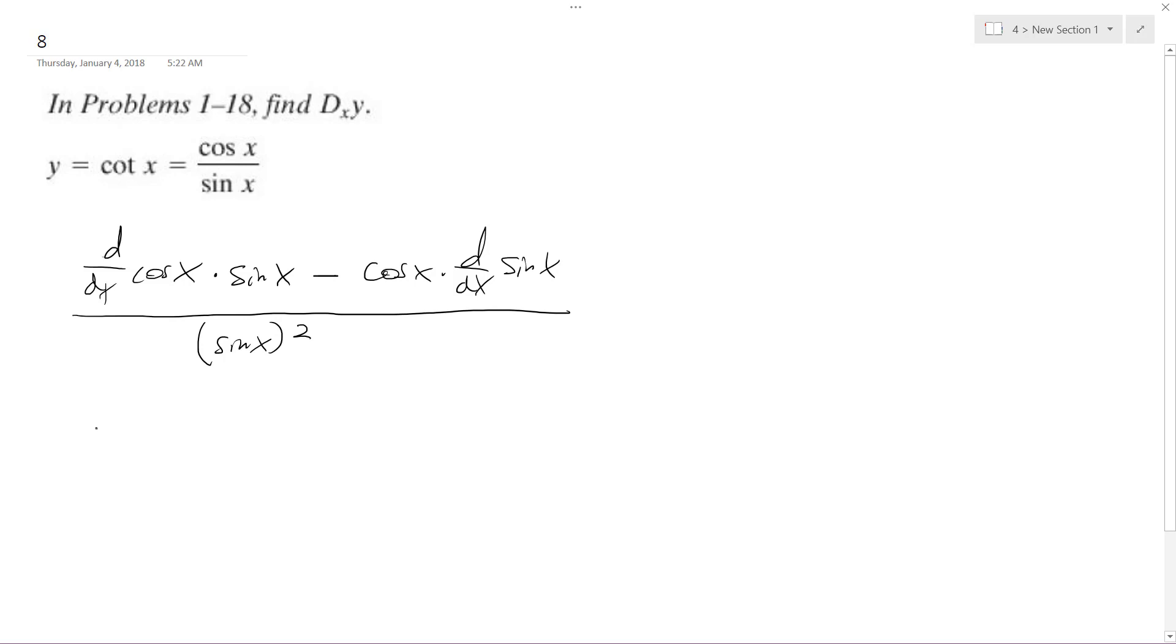So what we end up with is negative sine of x times sine of x minus cosine of x times cosine of x, and we have sine squared of x in the denominator.